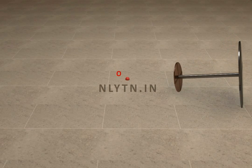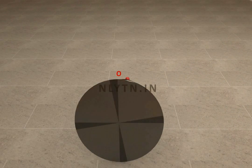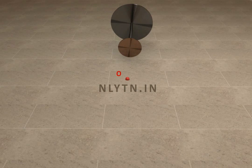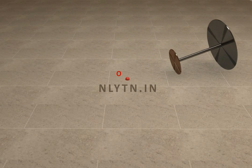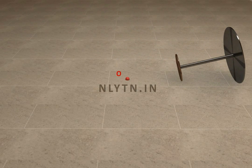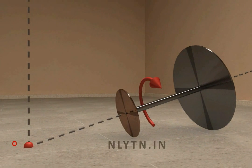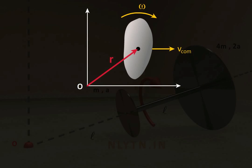The situation given to us will be as shown. Angular momentum of a rigid body with respect to some point in space is equal to the angular momentum of the body with respect to its center of mass, plus the angular momentum of the center of mass of the body with respect to the point of concern.